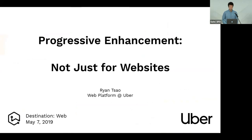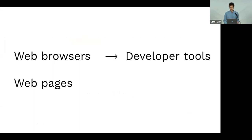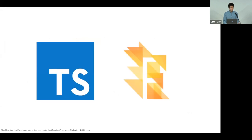Instead, I'm going to add to the mess with my own take. My name is Ryan Tsao, I'm an engineer on the web platform team at Uber. The title of this talk is 'Progressive Enhancement: Not Just for Websites.' When people talk about progressive enhancement it's usually about web browsers and web pages, but I want to look at it through a different lens — namely developers — looking at developer tools and source code.